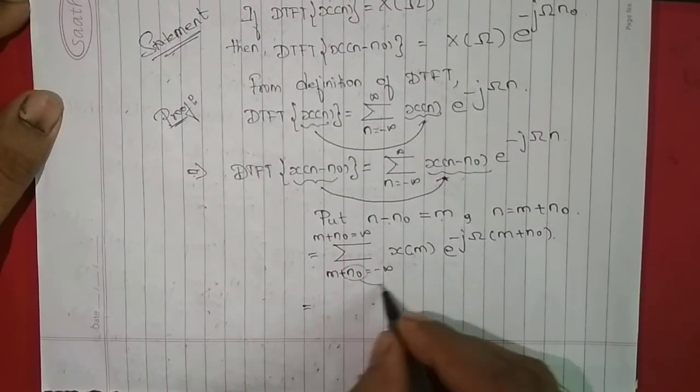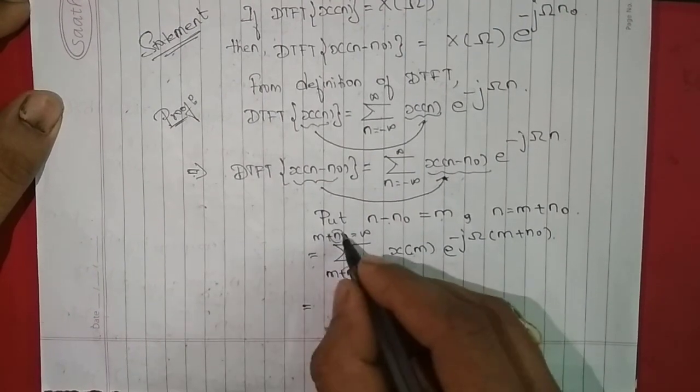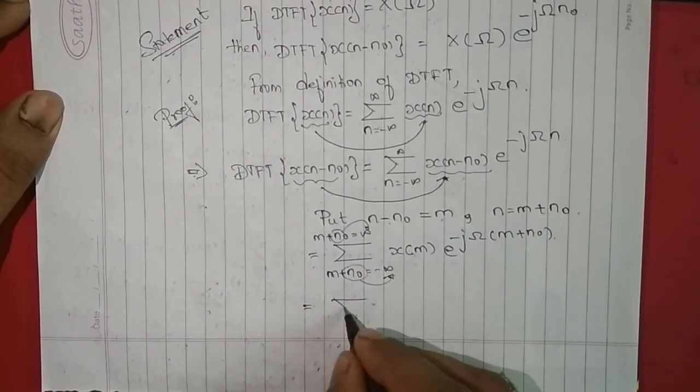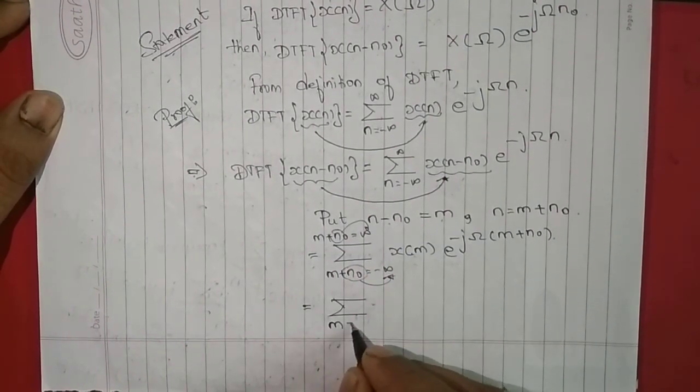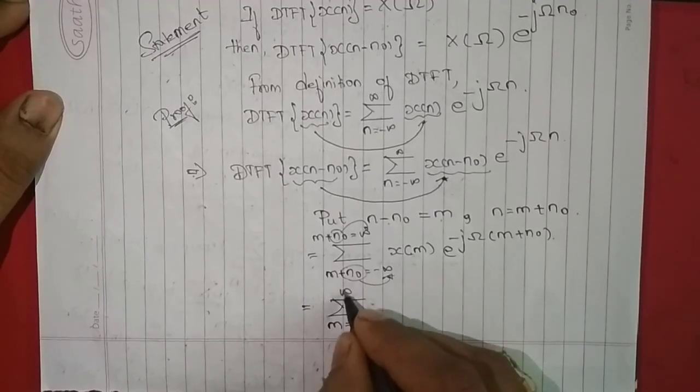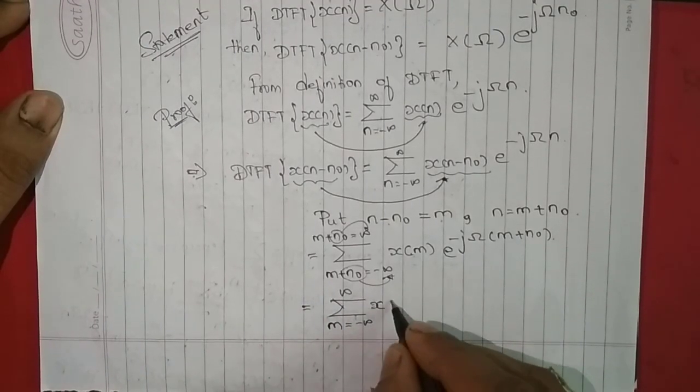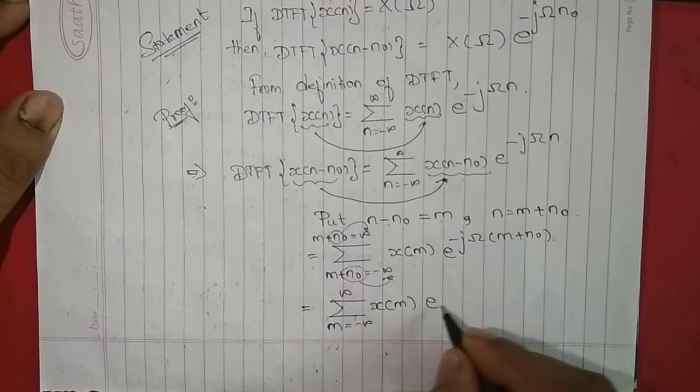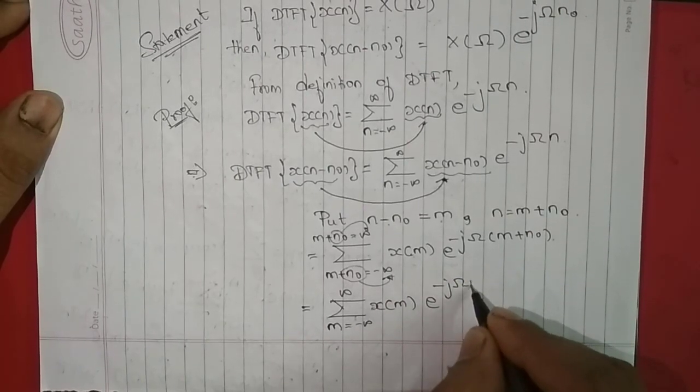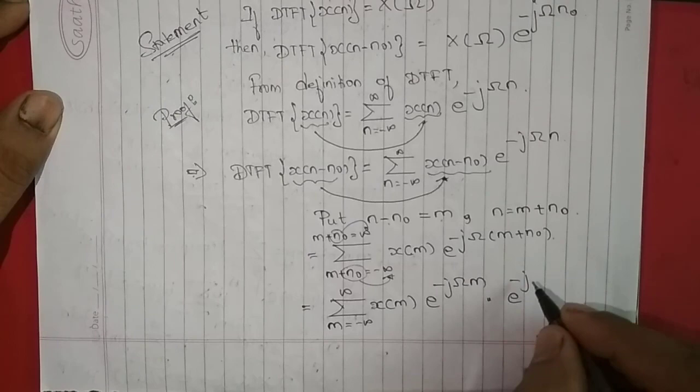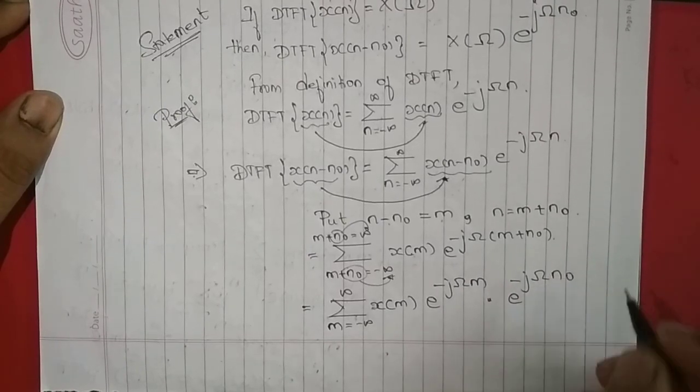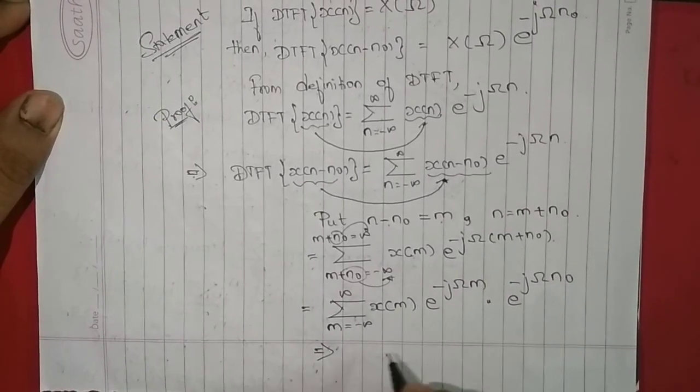I will take this n0 to the right hand side. So we get summation m varying from minus infinity to infinity, x(m)e^(-jωm) times e^(-jωn0). So I am splitting the exponential.